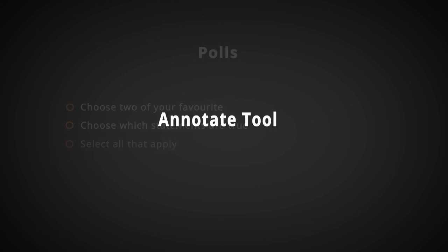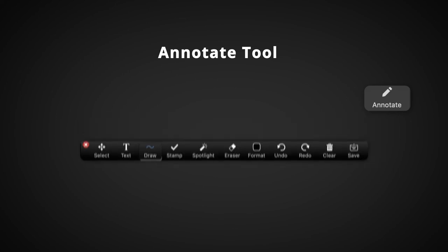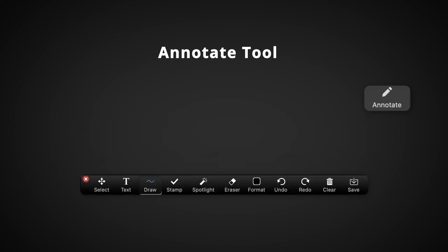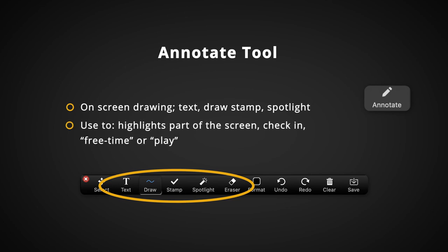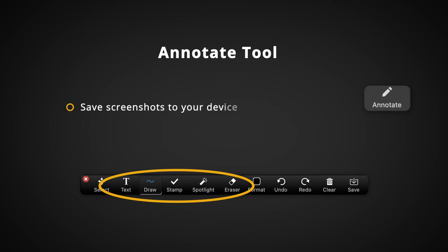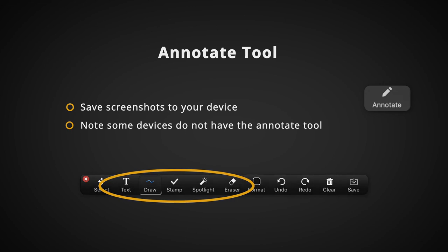The annotate tool allows participants to draw directly on the Zoom screen. Drawing tools include text, line, and shape drawing stamps, and spotlight arrows. Annotate may be used to highlight or draw attention to part of a screen during lesson delivery, to facilitate check-ins, opinions, or brainstorm activities with students, or to give students some free time for creative drawing. Screenshots of the annotations may be saved to the faculty's device. Note that not all devices have annotation as a feature.